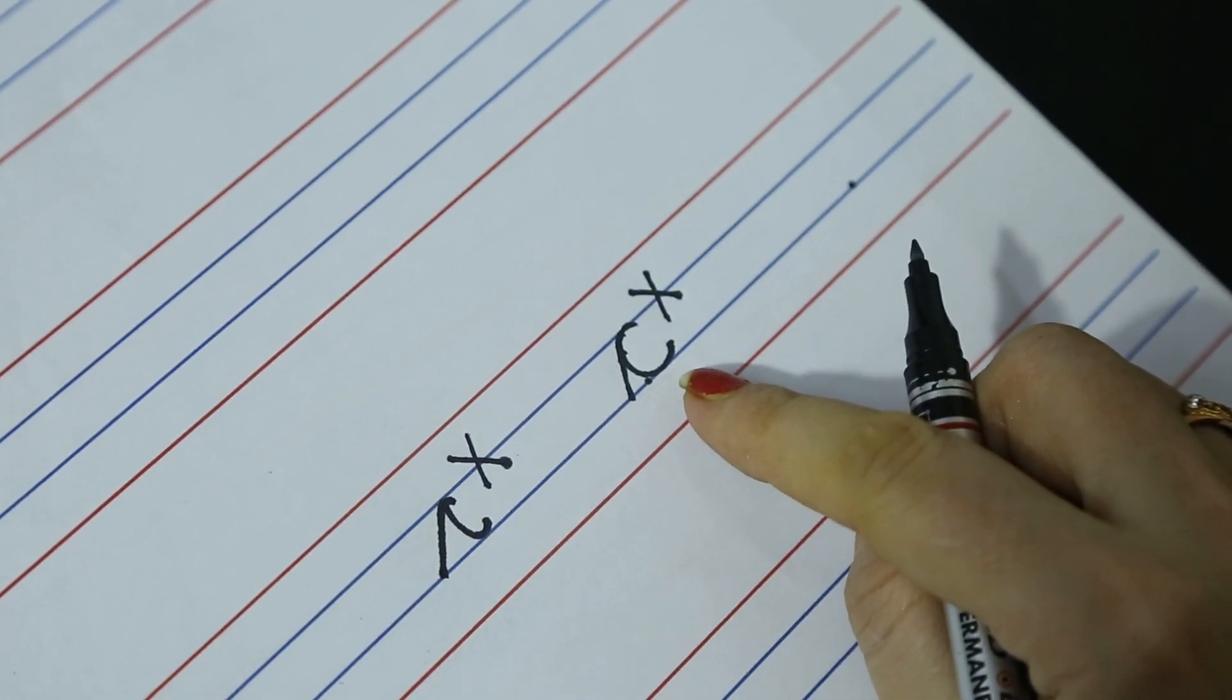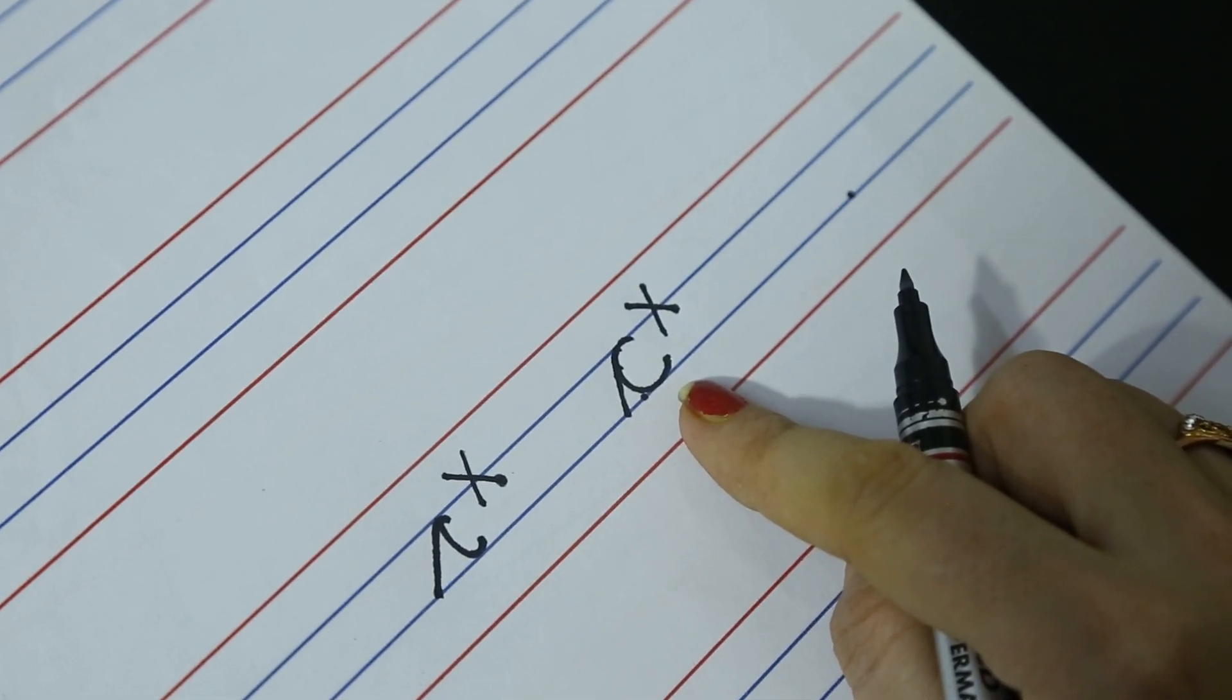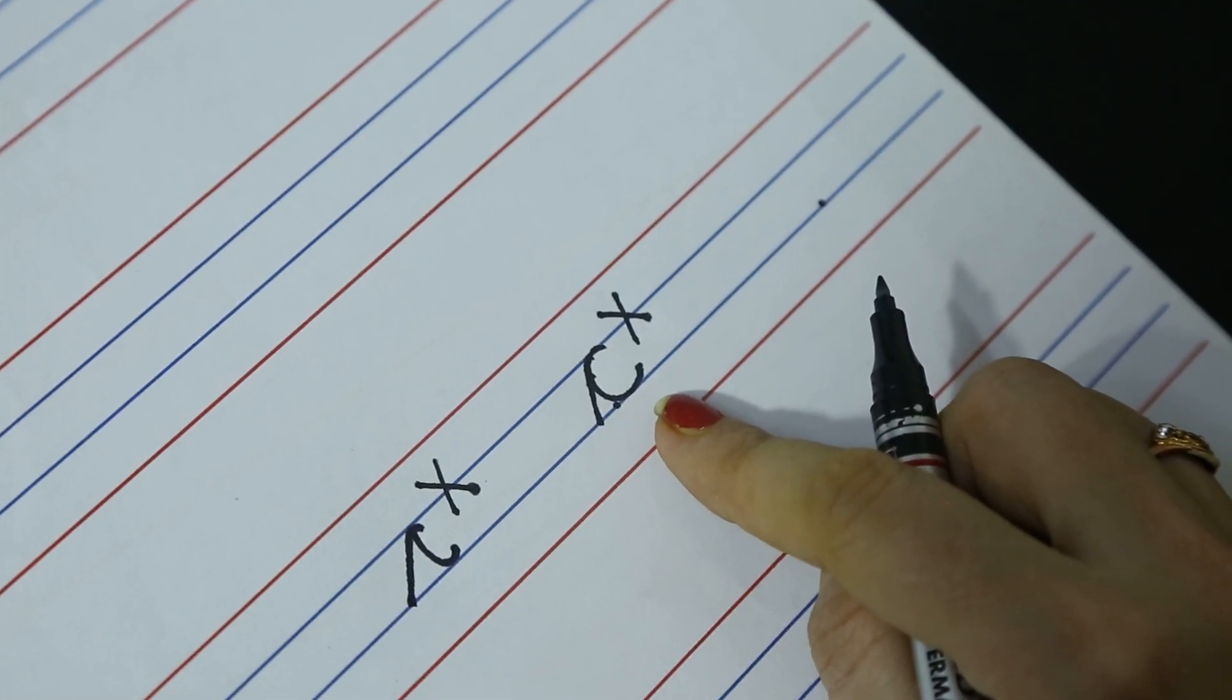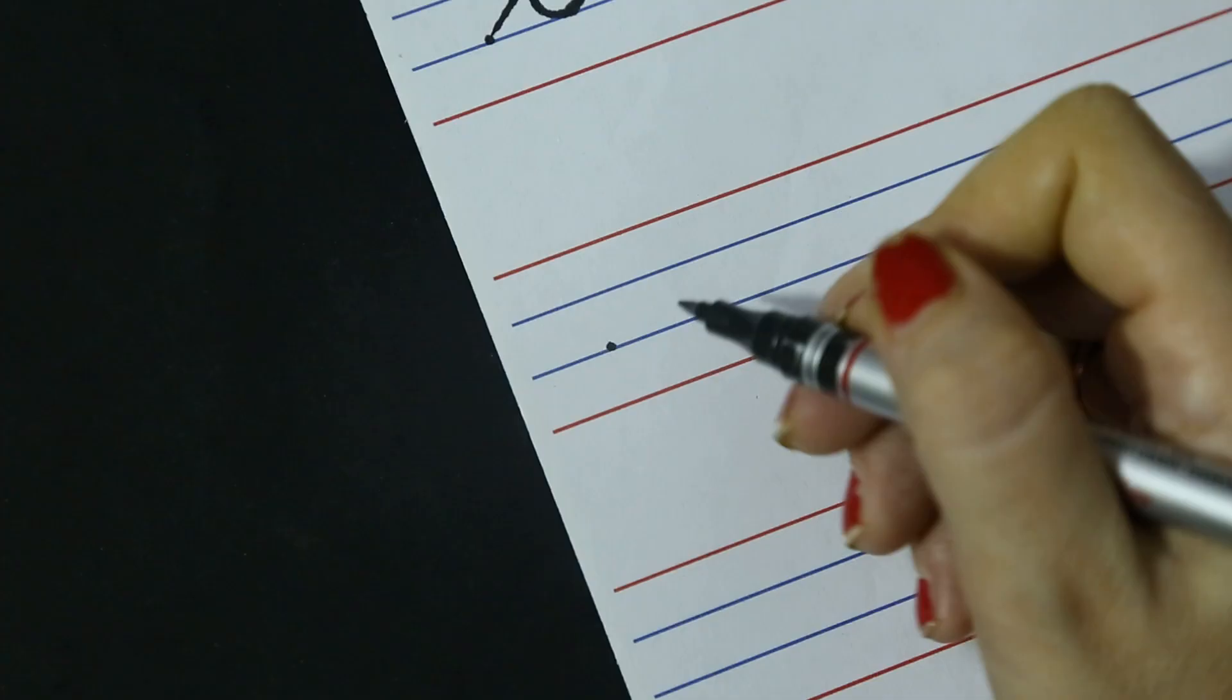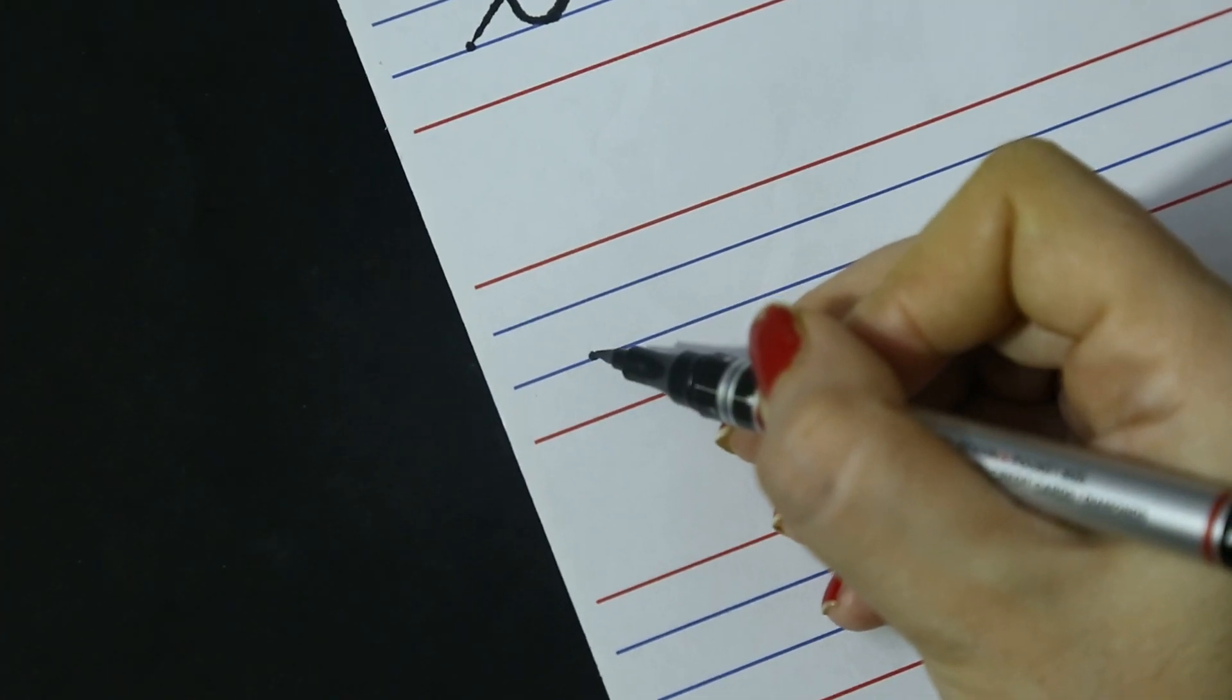We have to follow the correct pattern of making cursive letter C. Now feel so easy. Now see the hand movement carefully.